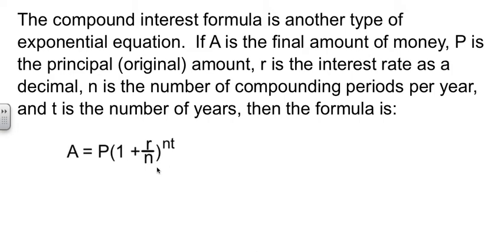If you're getting it compounded just yearly, then N would be 1. If you get compound interest 4 times a year, then N would be 4. If it's compounded weekly, there's 52 weeks in a year, so N would be 52. And it just depends on how many times a year you get the compounded interest.